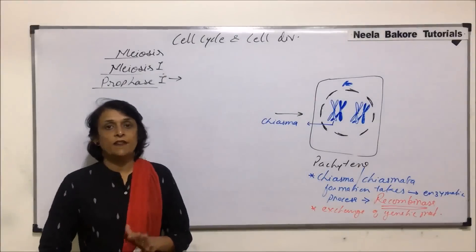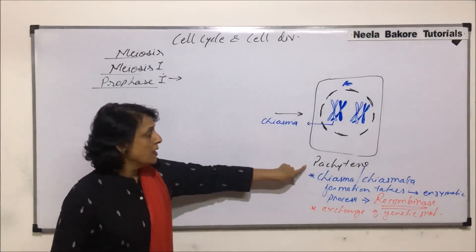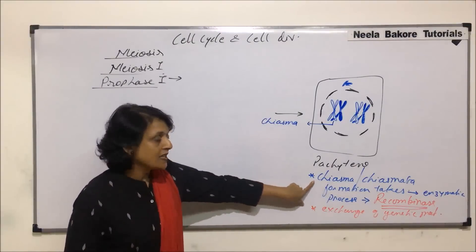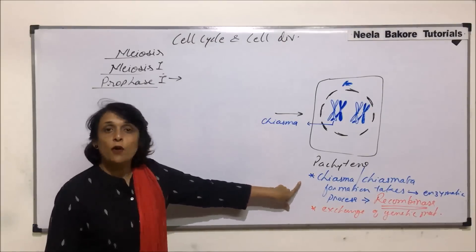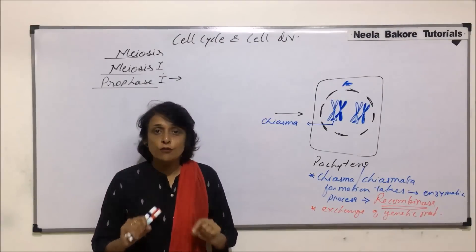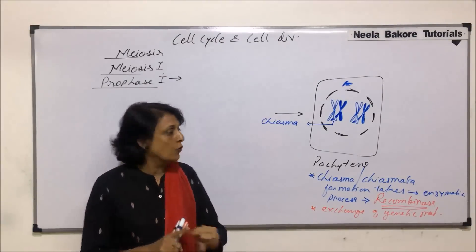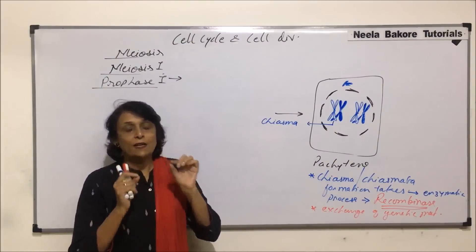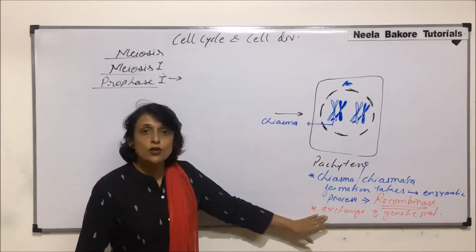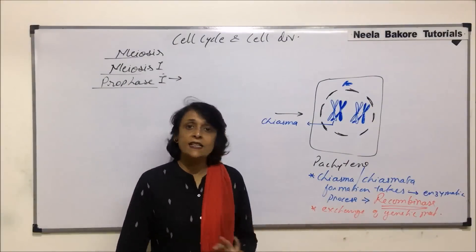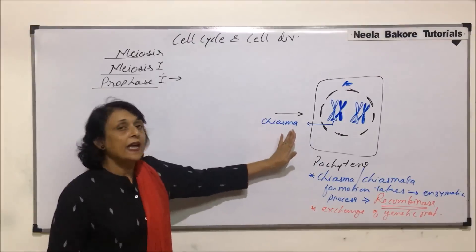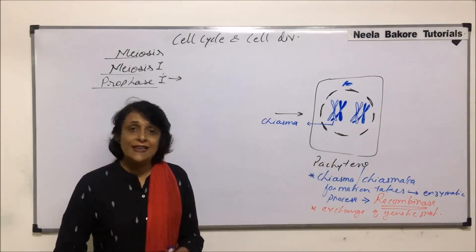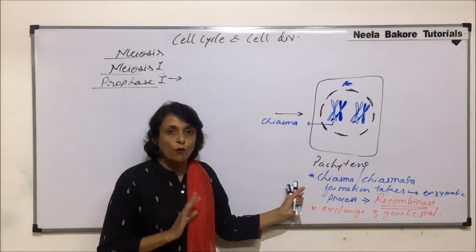We have discussed the various stages of meiosis till pachytene. In pachytene, we saw that chiasma formation takes place. Chiasma formation is when the non-sister chromatids, after crossing over with the help of enzyme recombinase, fuse. The crossing over takes place and the genetic material gets exchanged, and after this the next stage follows.